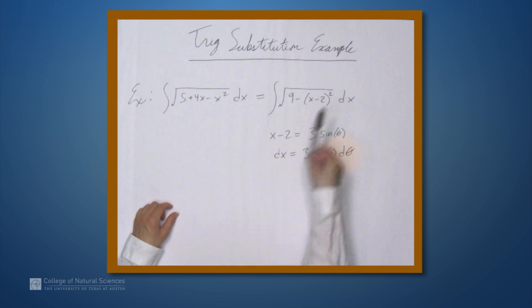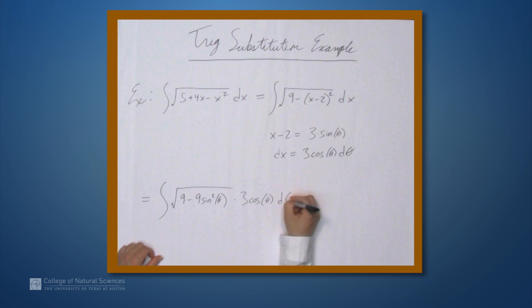So let's now rewrite this integral in terms of theta. So we get the integral of the square root of 9 minus 9 sine squared theta. And we'll replace dx with this expression, so times 3 cosine theta d theta. Do a little simplification inside this square root. So we can factor a 9 out of both of these terms and then take the square root of that so we get 3. And what we're left with inside is 1 minus sine squared theta, and that's cosine squared theta.